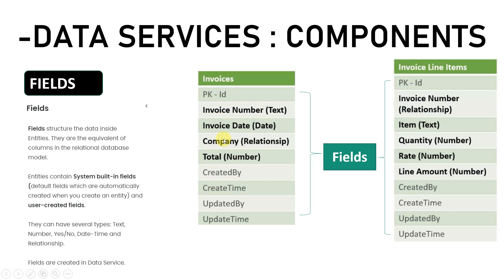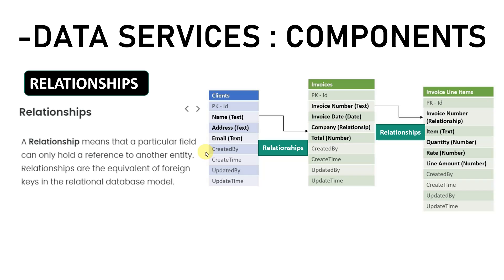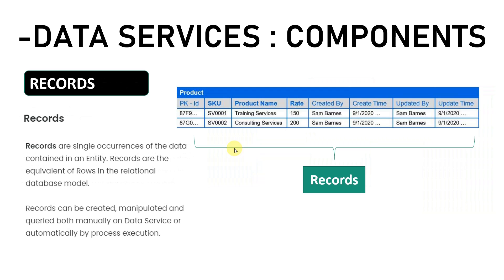Next we have relationships. A relationship means that a particular field can only have one reference to another entity — this is the same as the foreign key concept in SQL. For example, the name field of the client entity has a relationship with the company field of the invoices entity. We cannot have a record in invoices that is not related to the client name entity.